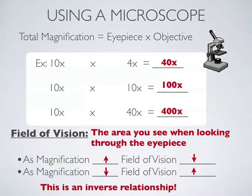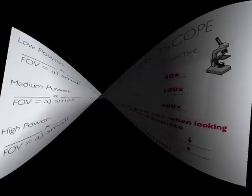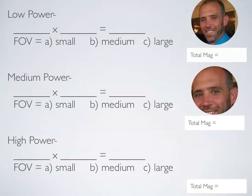So let's look at some examples. If I'm looking at some strange creature under my microscope at low power. What is our eyepiece power on low power? Raise your hand if you can tell me. Caitlin?